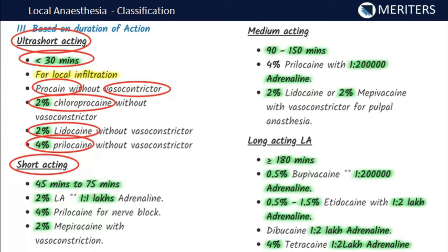Short-acting local anesthetics have a duration of 45 to 75 minutes. Examples include 2% lidocaine with 1:100,000 adrenaline, 4% prilocaine for nerve block, and 2% mepivacaine with vasoconstrictor. Medium-acting agents have a duration of 90 to 150 minutes, including 4% prilocaine with 1:200,000 adrenaline.